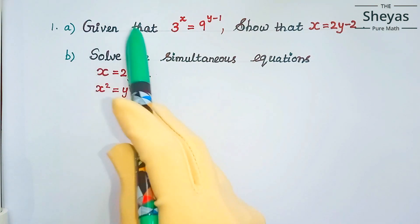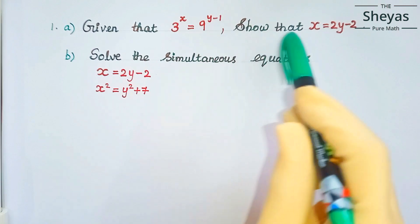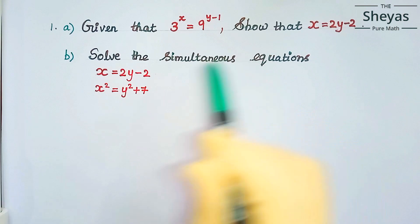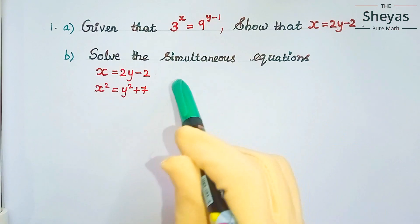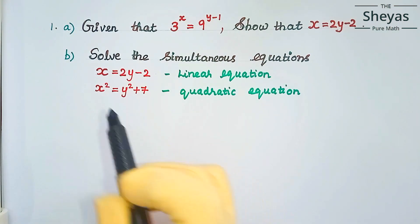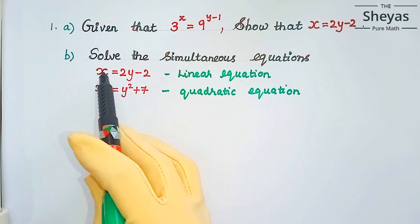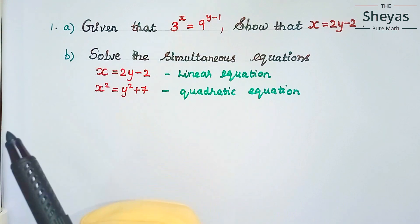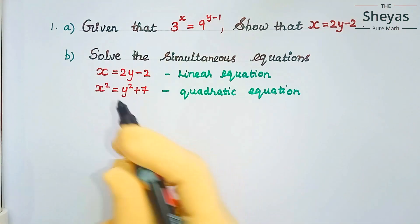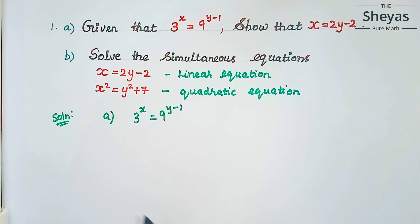Let us see an example problem. Given that 3^x = 9^(y−1), show that x = 2y − 2. Then solve the simultaneous equations x = 2y − 2 and x² = y² + 7. The first equation is linear — it involves x and y to the power of one — and the second is quadratic, involving x² and y². Let us solve part A now.